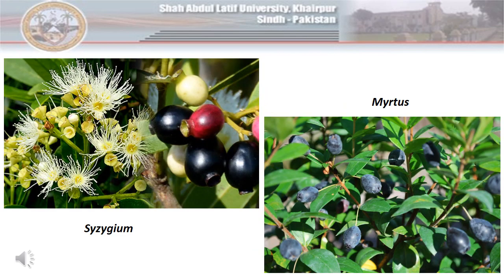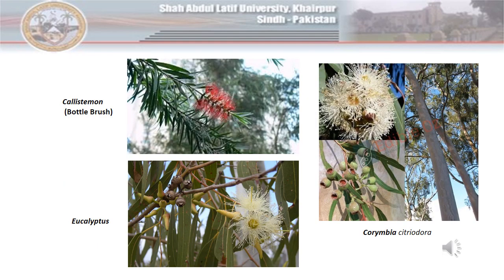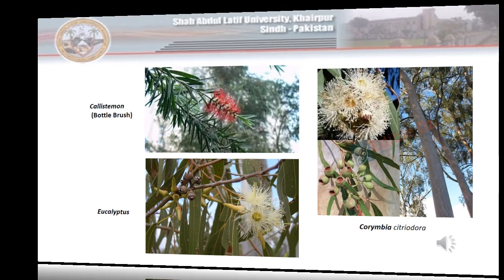The family is represented by 7 genera in Pakistan: genus Syzygium, which produces a very delicious fruit called Javan as shown in pictures; genus Myrtus; genus Psidium; genus Melaleuca; genus Callistemon, a common ornamental tree named as bottle brush; genus Eucalyptus, which is widely planted on brackish soil and roadside; and genus Corymbia, which is closely related to Eucalyptus in their appearance.